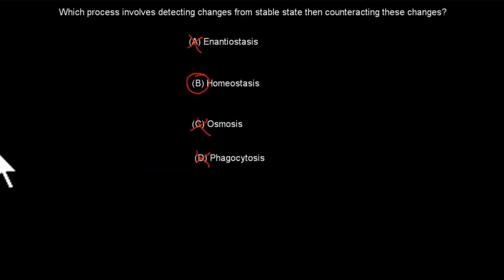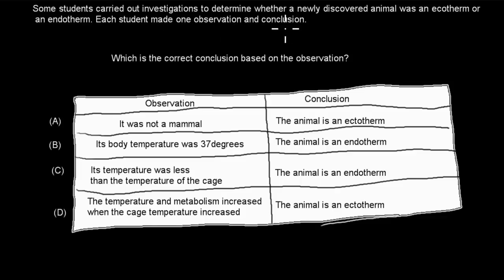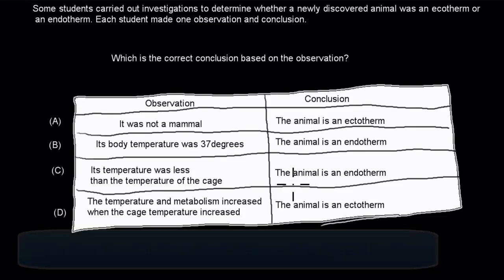The next question: Some students carried out investigations to determine whether a newly discovered animal was ectothermic or endothermic. Each student made one observation and one conclusion. Which is the correct conclusion based on the observations? Pause the video and attempt the question.